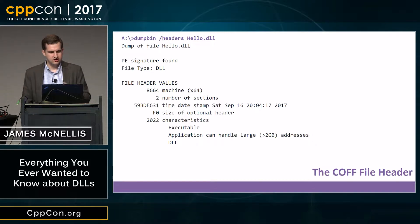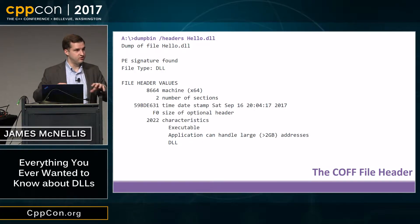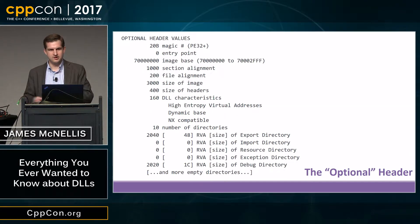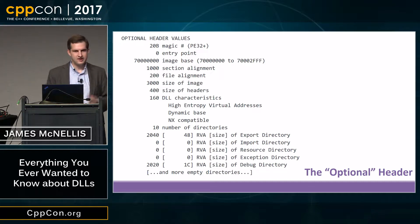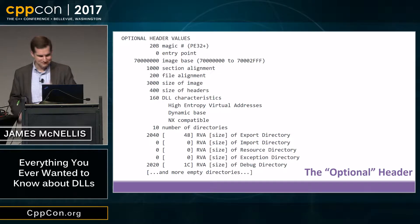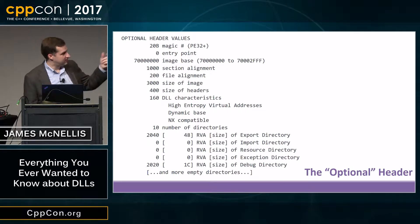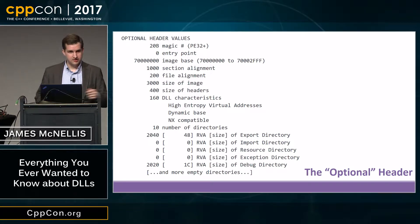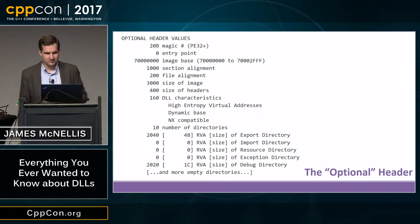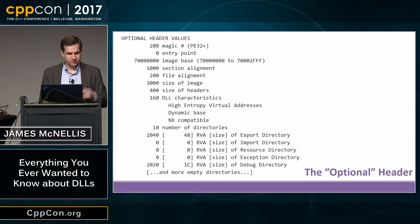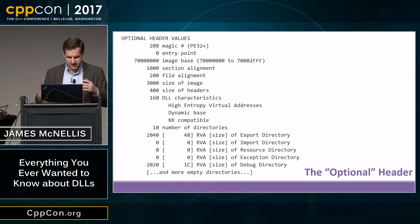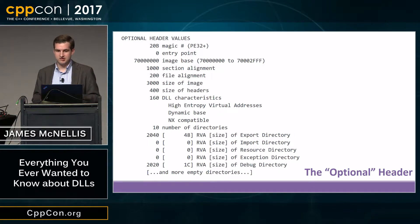The loader looks at the size of the optional header to determine which type to use to interpret it. There are two types: PE32 for 32-bit binaries and PE32+ for 64-bit binaries. The optional header includes a magic number for validation, the entry point (null here since we passed /NOENTRY), the preferred base address for the image, alignment information, the size of the image (0x3000 bytes), and then some directories — which are additional metadata about what's inside the DLL. The directories list RVAs and sizes.